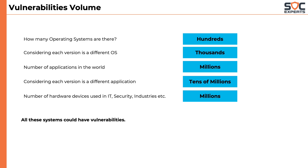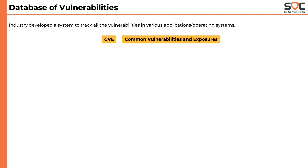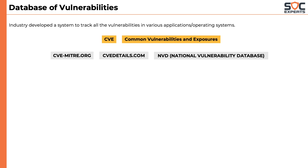To report and track the vulnerabilities not identified by the product testing team, the industry created a common database of all vulnerabilities identified in all well-known or widely used applications. This is called the CVE — Common Vulnerabilities and Exposures. These databases are maintained by a few not-for-profit organizations like CVE-MITRE, CVE-Details, and the US government's NVD, the National Vulnerability Database.